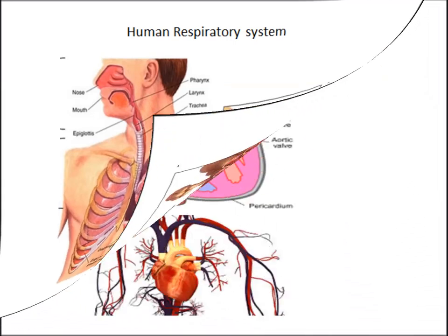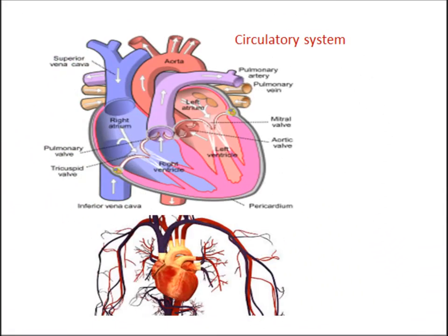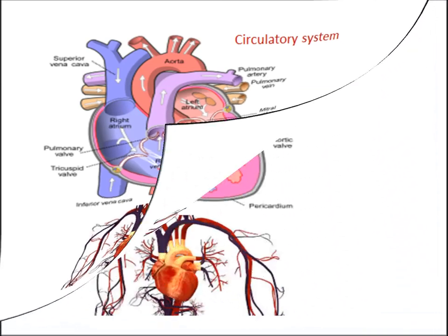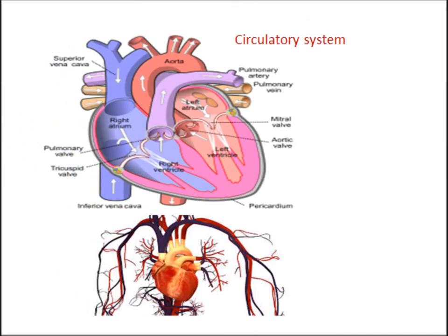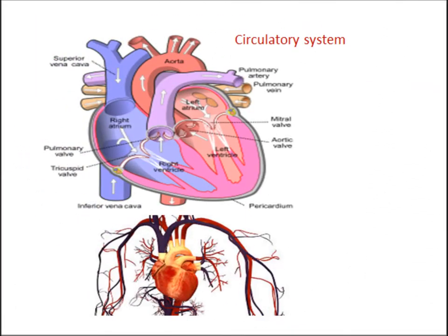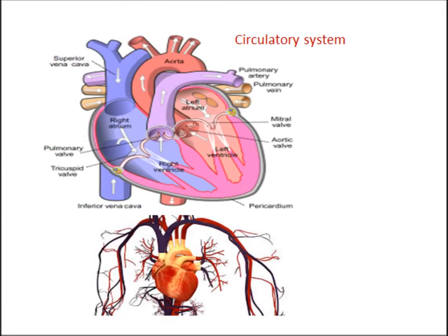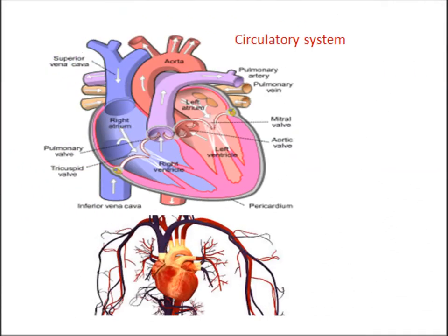Nutrition absorbed into the bloodstream during food digestion has to be transferred to organs and cells in the body. Carbon dioxide produced in the cells during respiration has to transfer to the lungs, and waste matter transfers to the liver and kidneys. The circulatory system circulates blood throughout the entire body, and mainly consists of arteries, veins, and the heart. The main organ of the circulatory system is the heart.